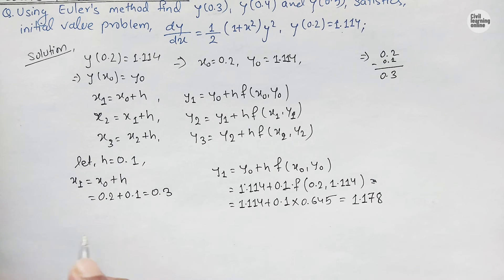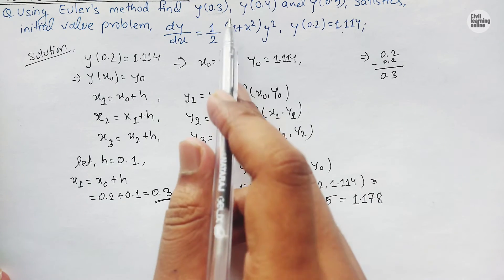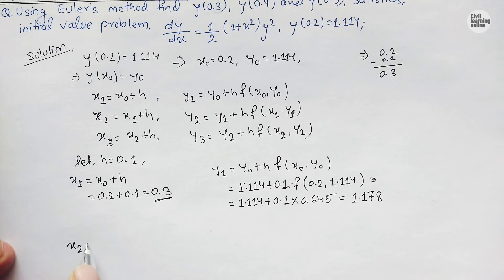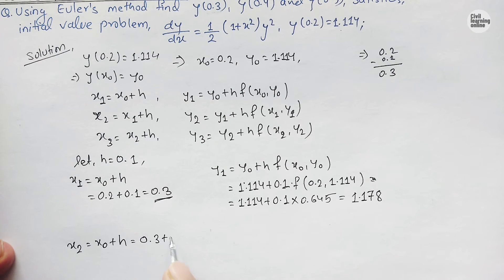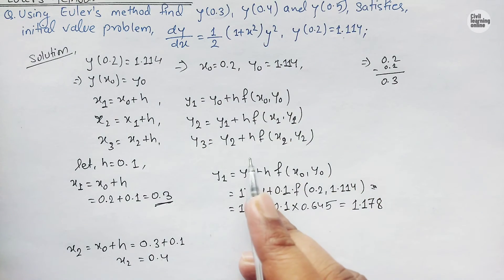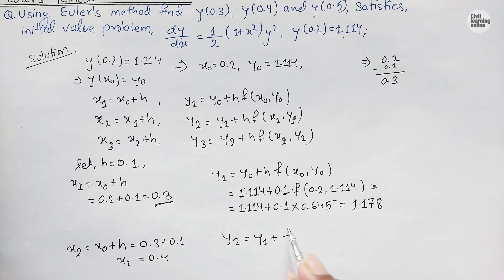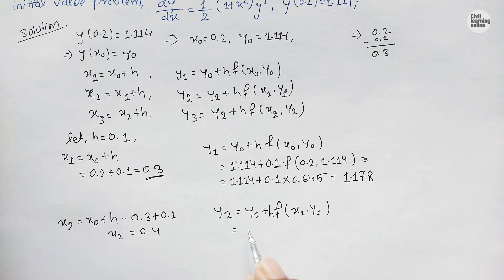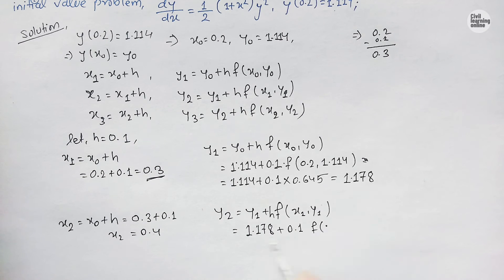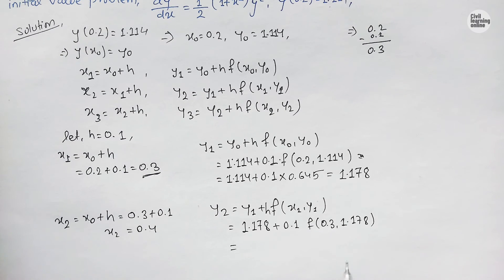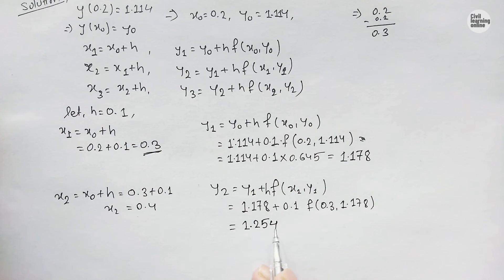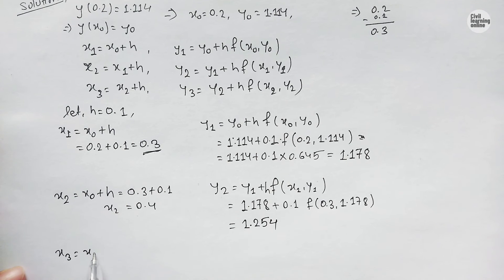We have calculated y(0.3) = 1.178. Now for x₂: x₂ = x₁ + h = 0.3 + 0.1 = 0.4. So we will be calculating y(0.4). y₂ = y₁ + h·f(x₁, y₁) = 1.178 + 0.1·f(0.3, 1.178). Solving this, we get y₂ = 1.254.